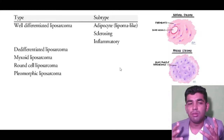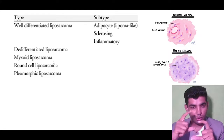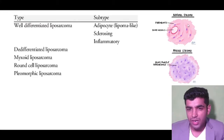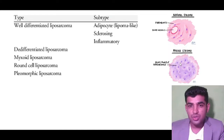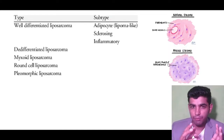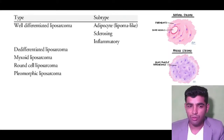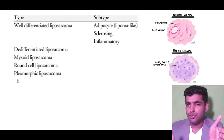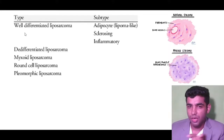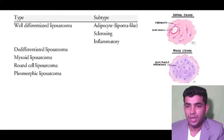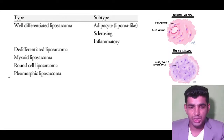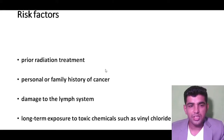Myxoid liposarcoma is named for its myxoid stroma, which appears blue-purple under the microscope, unlike normal stroma. Round cell liposarcoma has round cells present. Pleomorphic liposarcoma shows cells of different shapes and structures. In summary: well-differentiated, de-differentiated, myxoid, round cell, and pleomorphic are the five main types.